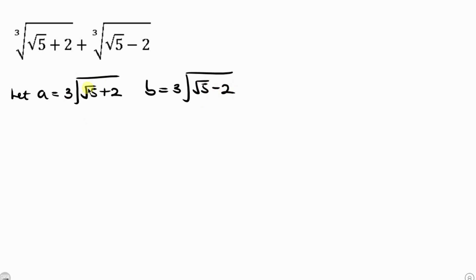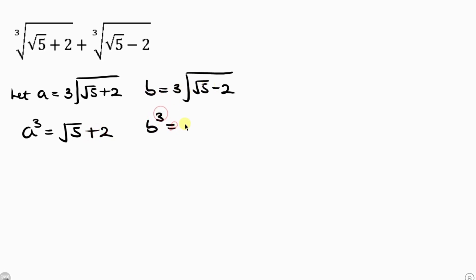Now let's remove the radical by taking the cube of both sides. When I take the cube of both sides, I'm going to have A cubed equal to the square root of 5 plus 2. I'll do the same thing to the other one, so B cubed is equal to the square root of 5 minus 2.